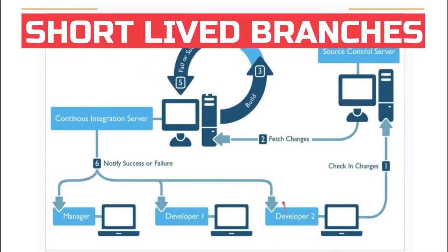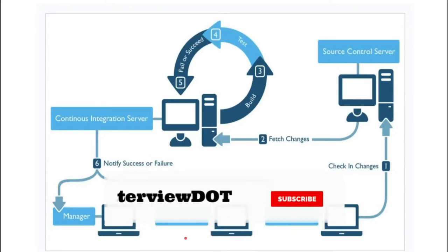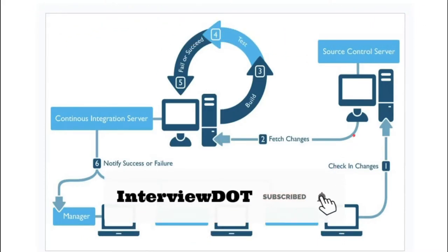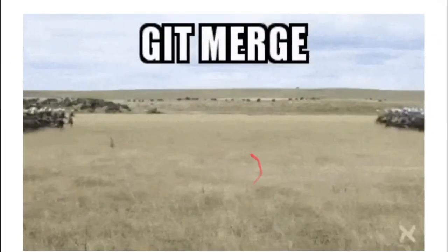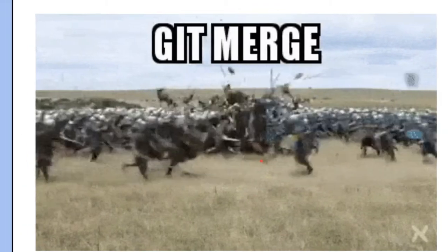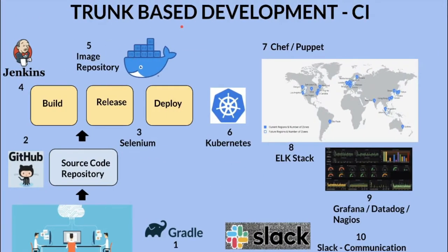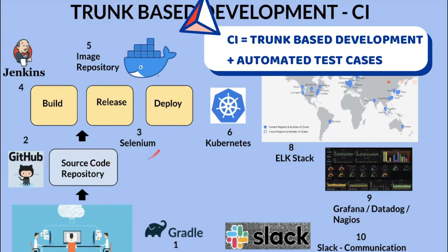One of the benefits is we will have short-lived branches. For each feature we quickly create a branch and once it's done we merge to the master to get early feedback, which helps us avoid huge merge conflicts. Trunk-based development is a required practice for continuous integration — CI is a combination of trunk-based development and fast automated test cases.